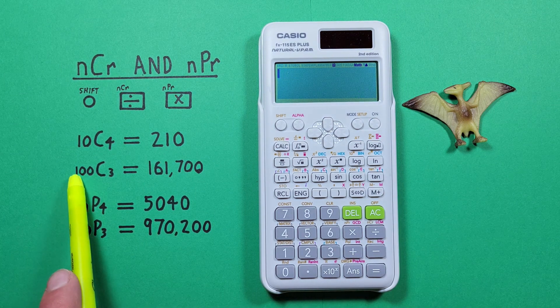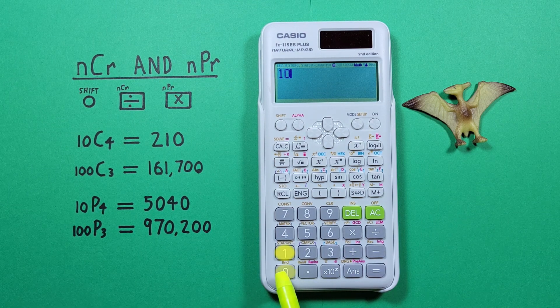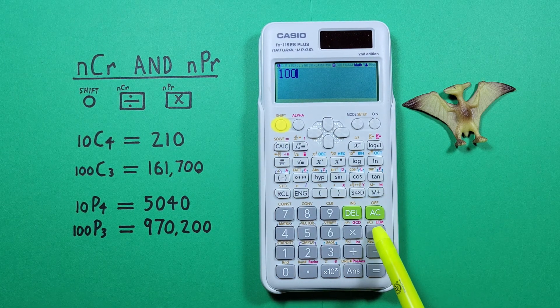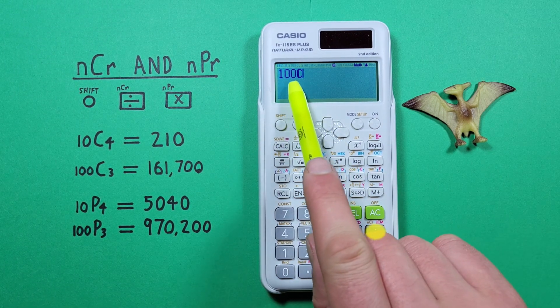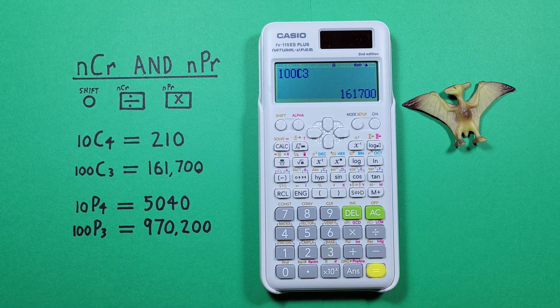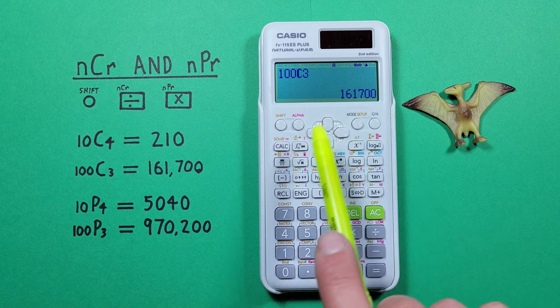Another example, if we have 100 choose 3, we enter the 100, press shift, division to get the C there for combinations and then 3 equals and see we get a result of 161,700 which is correct.